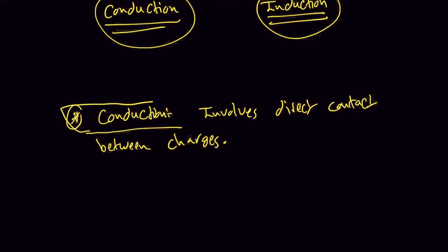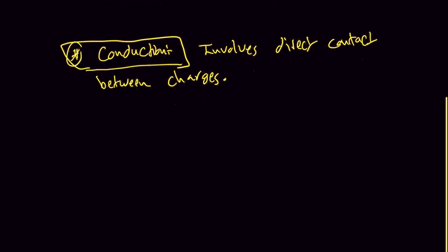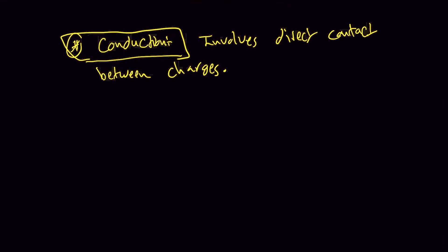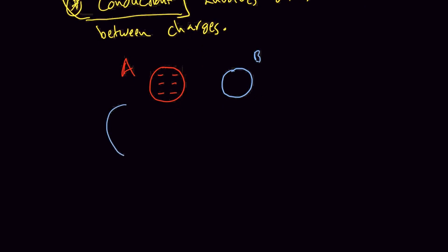Simply put, it's a mechanism for charging in which two different objects are going to be in contact with each other. Let's say we have charge A, which is a negative charge, and charge B, which is completely neutral — meaning the positive and negative charges are simply equal to each other. Charge A is predominantly negative, which means it has extra electrons in it.